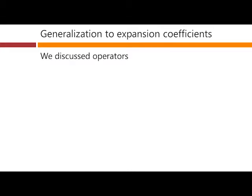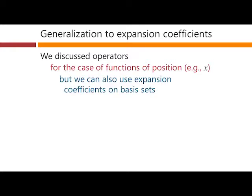So far we discussed operators for the case of functions of position, such as position x. And we used this argument to show that the matrix was the best possible, most general way of writing a linear operator, at least when we were talking about position. But we can also use the same argument to deduce that this also works when we're talking about operators expressed as expansions on basis sets.